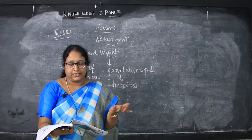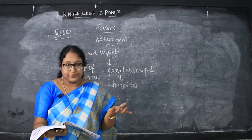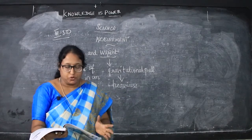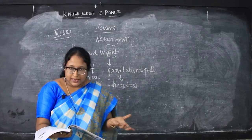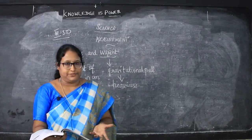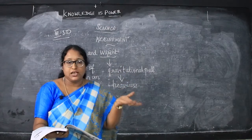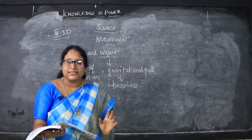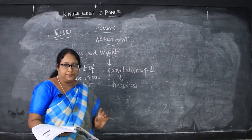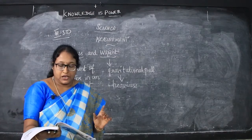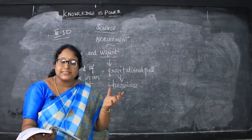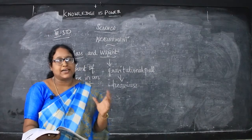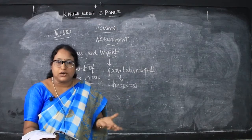For example, on the moon there is a gravitational pull that is lesser than the earth. The weight will reduce but the mass will remain the same of an object. If you keep an object on the moon, the weight reduces but the mass which is there in the object remains the same. The gravitational pull is one sixth of the earth's pull, so the object weighs six times lighter on the moon than on the earth.